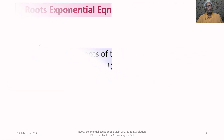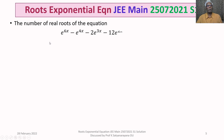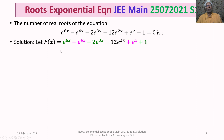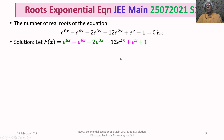Let us now discuss the solution in detail. Let F(x) = e^(6x) - e^(4x) - 2e^(3x) - 12e^(2x) + e^x + 1. We now factorize this expression. The terms e^(6x) - 2e^(3x) + 1, shown in green, can be clubbed and written as (e^(3x) - 1)^2. The pink terms, -e^(4x) + e^x, give -e^x(e^(3x) - 1), and we are left with -12e^(2x).